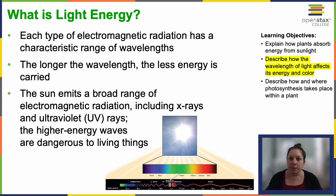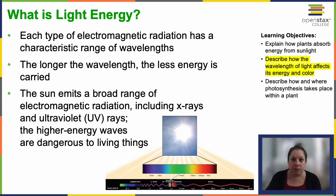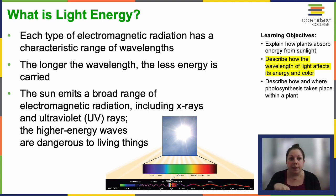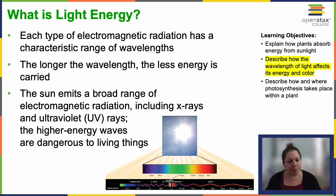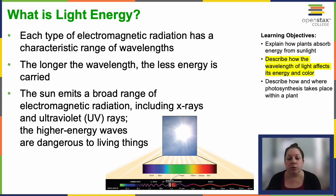You can even see this in action if you go grab a buddy and a jump rope — you can move it up and down and create standing waves. It takes a lot more energy to make many tightly packed waves than it does to make just one or two long, slow waves. So the sun emits energy in the form of electromagnetic radiation, and that radiation exists in different wavelengths, each with its own characteristic energy.